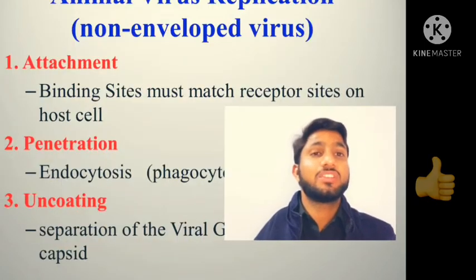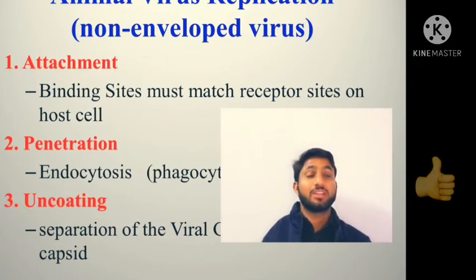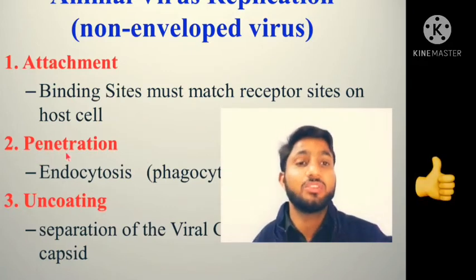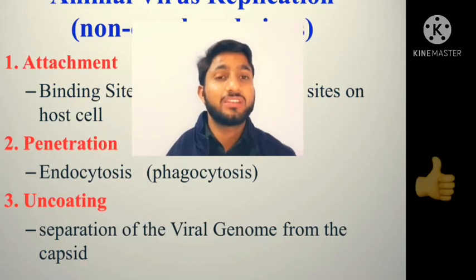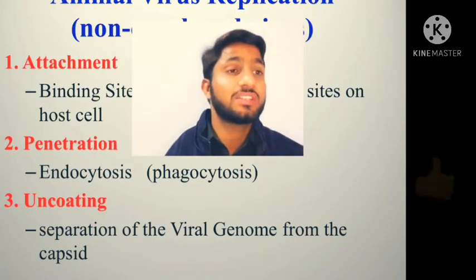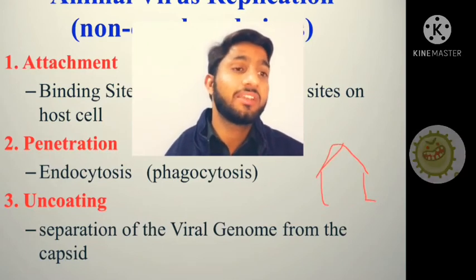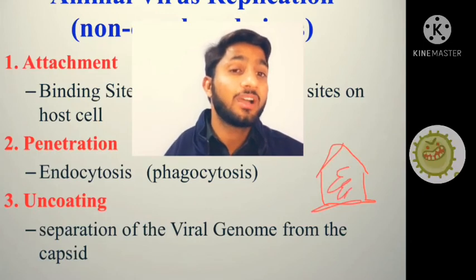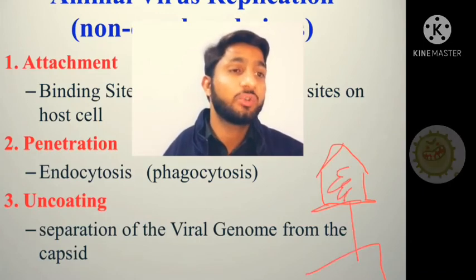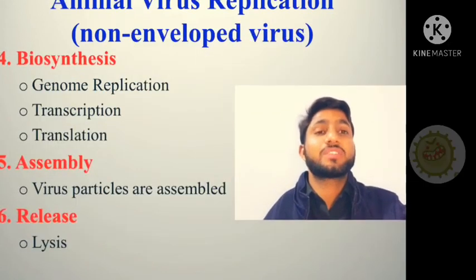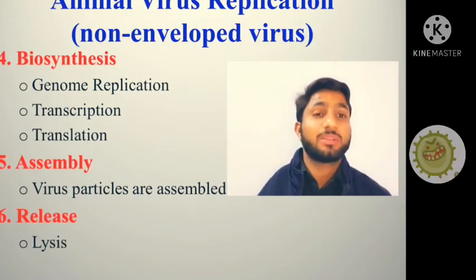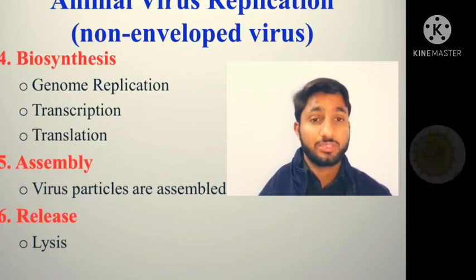For animal virus replication in non-enveloped viruses, the steps are: attachment, where the binding site matches; penetration via endocytosis or phagocytosis; uncoating, where the viral DNA is released; then biosynthesis, where the virus replicates; then assembly; and finally, the virus is released from the cell.